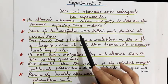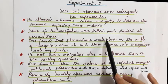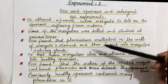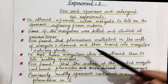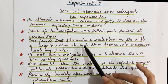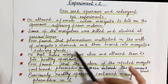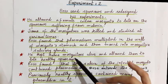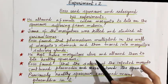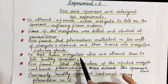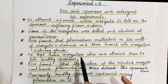Ross found that plasmodium multiplied in the wall of the mosquito's stomach and then moved into the mosquito's salivary gland. So in the infected Culex mosquito, plasmodium was multiplying in the stomach wall and then moving to the salivary glands. He then kept some mosquitoes alive and allowed them to bite healthy sparrows.